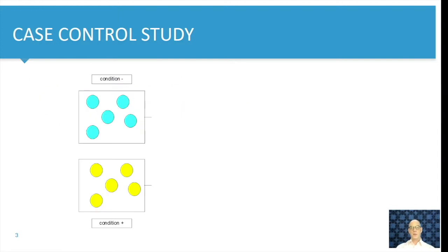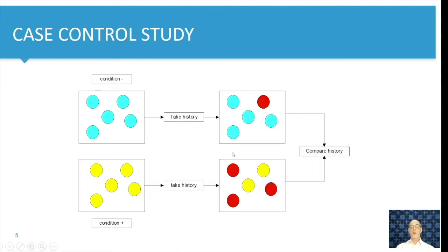In an earlier video we visualized a case control study in the following way. We select people with the outcome of interest, here in yellow, and controls without the outcome of interest. In both groups we have a history taking to assess the frequency of a certain exposure and then we compare these frequencies of exposure.